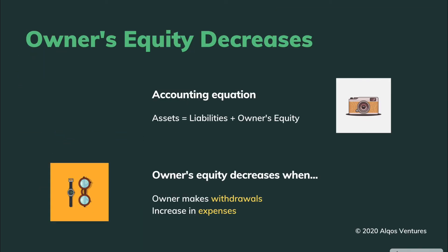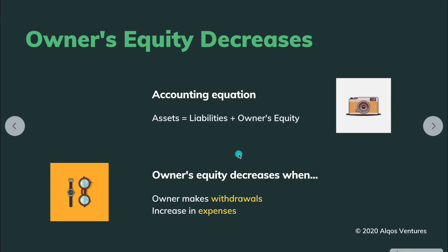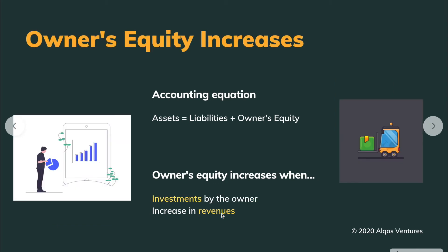Jumping right in, let's have a look at the accounting equation from our previous videos. Assets equals liabilities plus owner's equity. Owner's equity decreases when the owner makes withdrawals from the business or there's an increase in expenses.